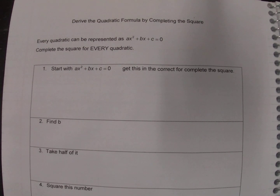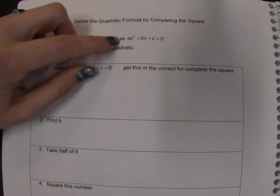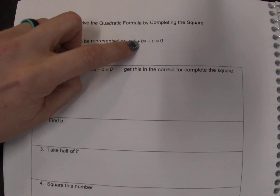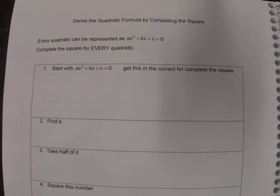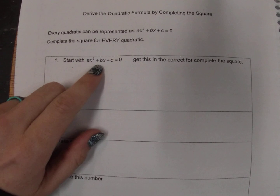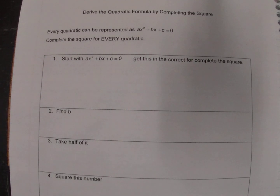We know completing the square works the best when b is even. But we also know that for it to work, completing the square actually has to be in the form x squared — so a has to be one — plus bx equals, and then that c is moved over to the other side. So if we know this is representing every single quadratic and we want to complete the square, the first thing we have to do is get it in the correct format.